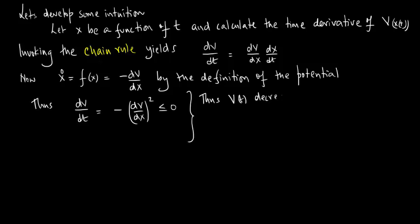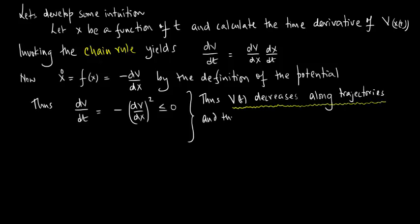V decreases along the trajectories — that is worth highlighting — and thus the particle moves towards a lower potential.